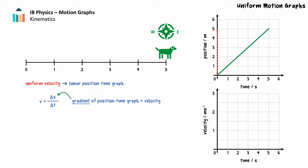The change in displacement, which can be read off of the vertical axis of the graph, is 5 meters. The time over which this change occurs, which can be read off of the horizontal axis of the graph, is 5 seconds. Therefore, the gradient and velocity is 1 meter per second.